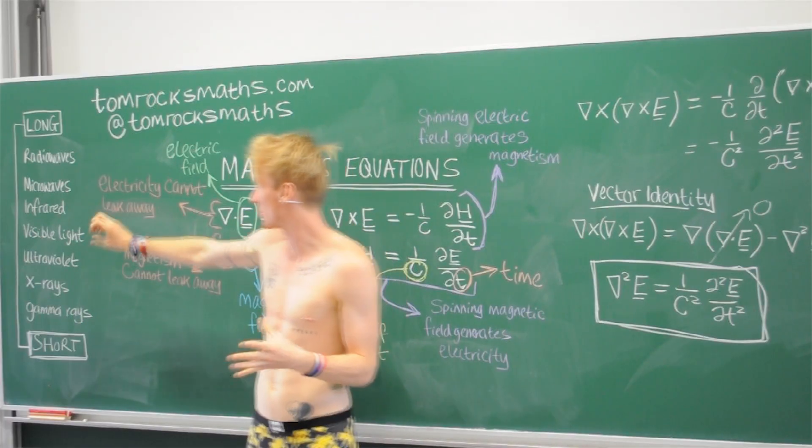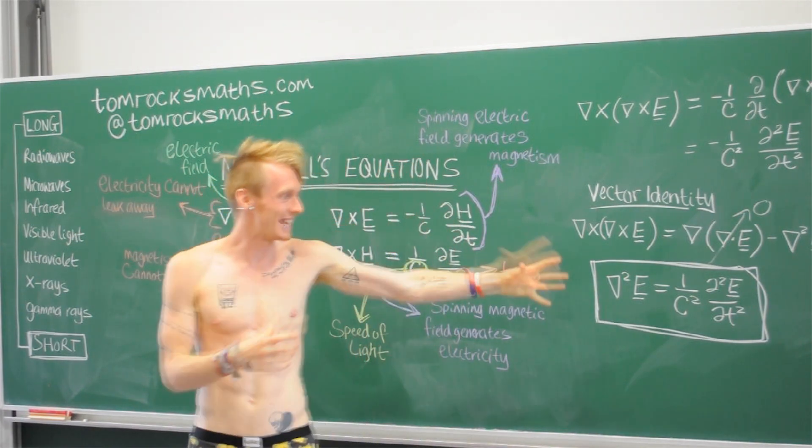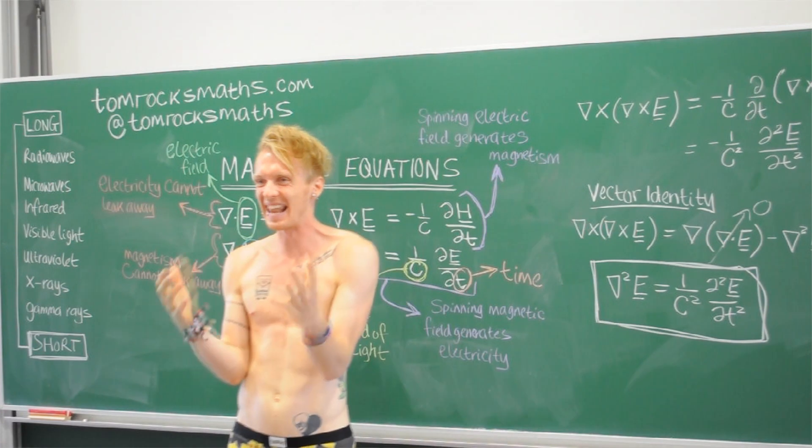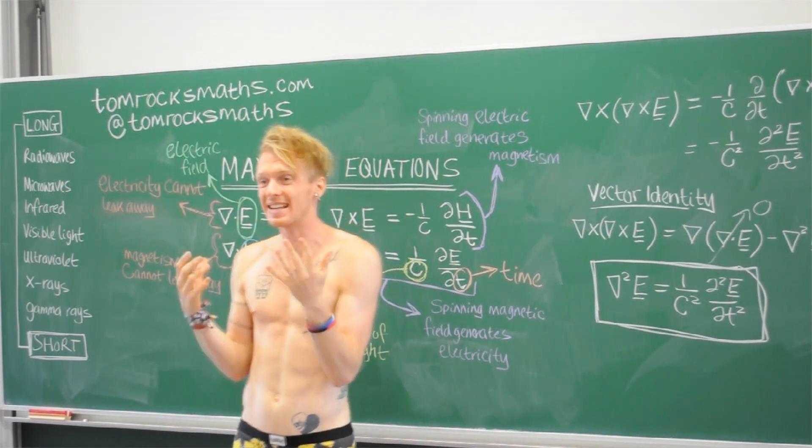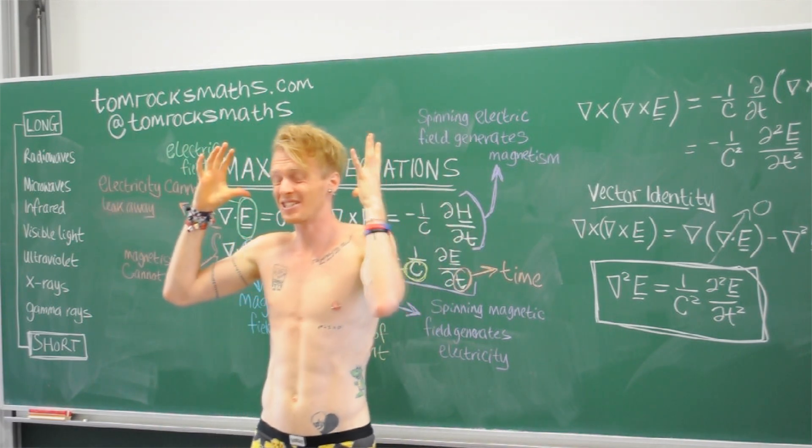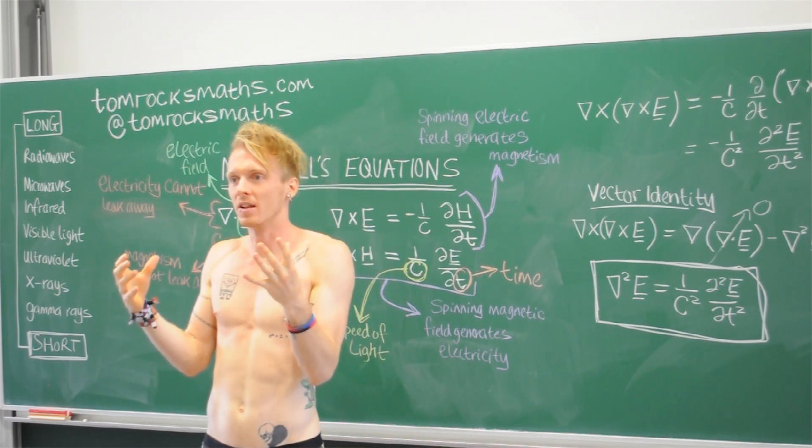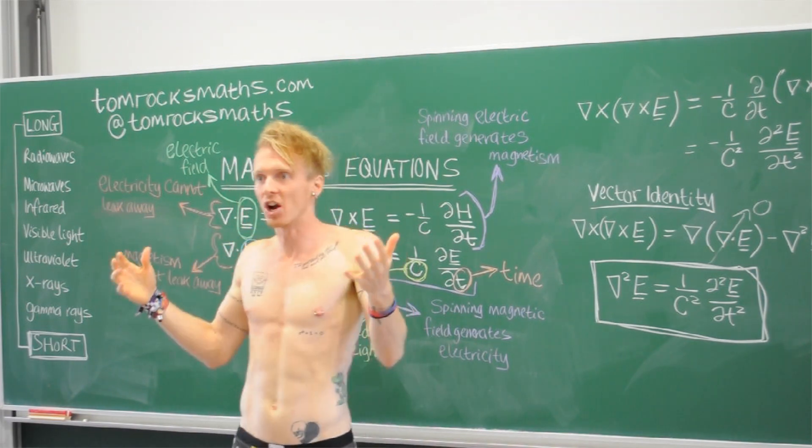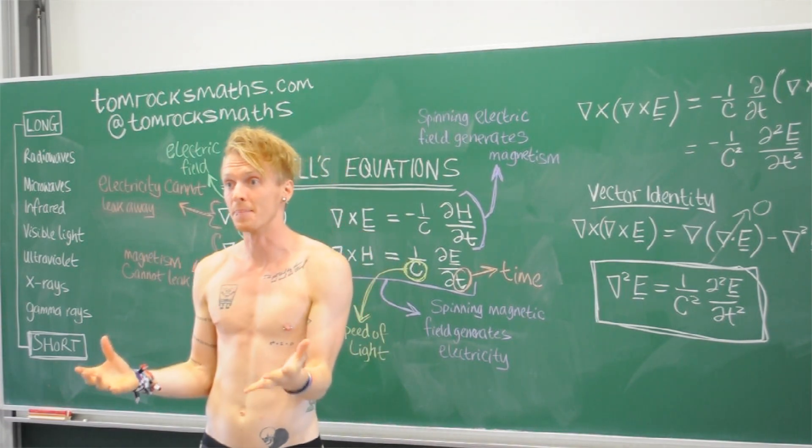But, of course, we can only see the visible ones. So, before Maxwell's equations and this link to the wave equation, the fact that light is a wave and that these wavelengths of light should exist, before that, we had no idea. It's just incredible that he came up with this and then scientists were like, right, well, if these things must exist, let's go find them. Let's go find these other wavelengths and then let's see what we can do with them.